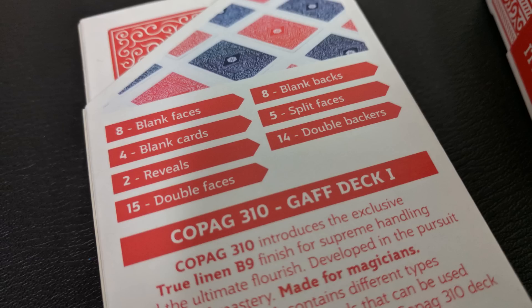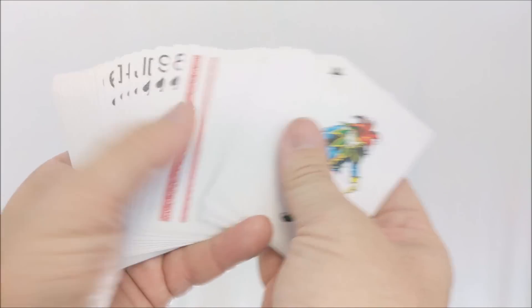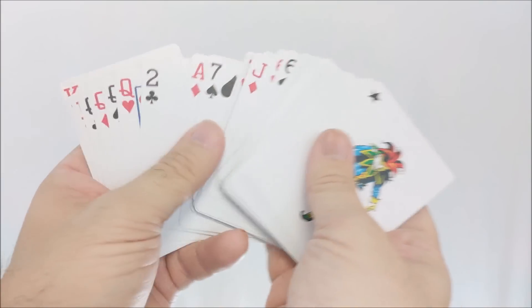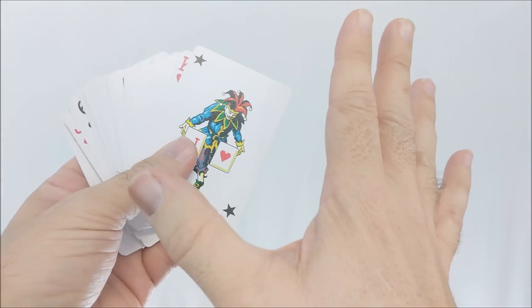Inside this deck, you're going to get eight blank face cards, eight blank backed cards, four complete blank cards, five split faces, two reveals, 14 double backers and 15 double facers. I'm actually going to turn the camera around and go through these a little bit just so that you can see them right now. All right, we'll try to go through all these cards for you one at a time and show them all to you. I hope I can keep them all in focus.